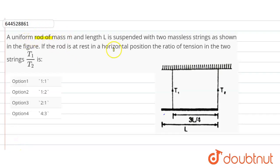A uniform rod of mass m and length L is suspended with two massless strings as shown in the figure. If the rod is at rest in a horizontal position, the ratio of tension in the two strings T1 by T2 will be?